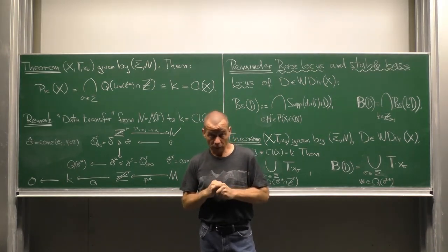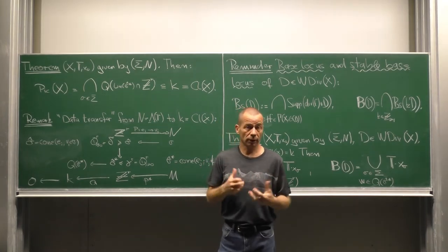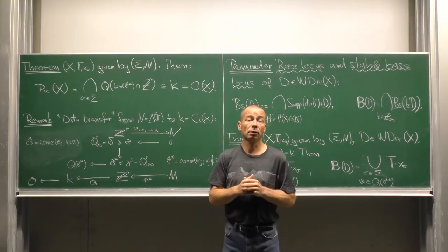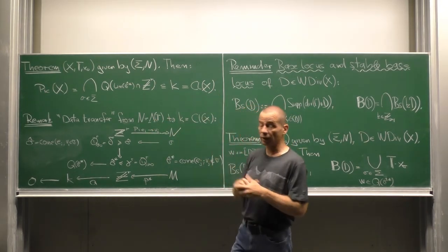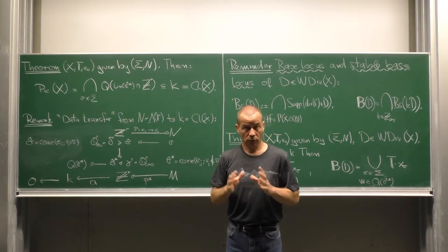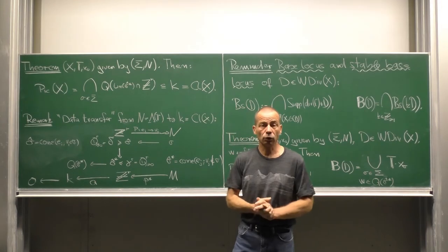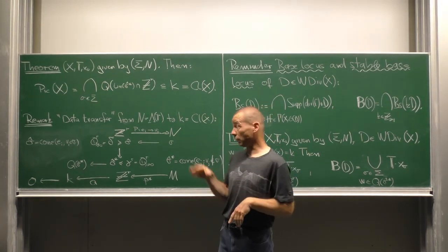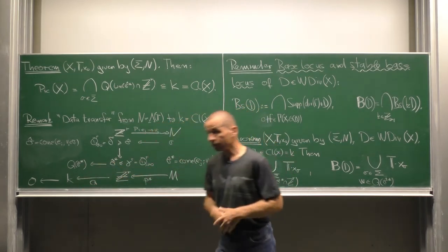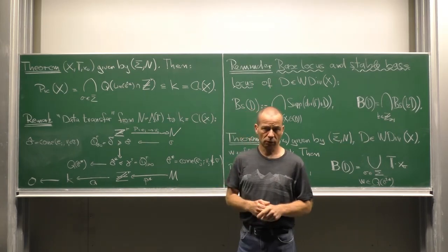A philosophical remark behind what we just did is a general principle of transferring information from the lattice of one parameter subgroups to the divisor class group. Recall that these two groups are related to each other via the map p from Z^r to N sending the i's canonical basis vector to the i's primitive generator v i. The divisor class group k is a factor group of Z^r modulo the image of the dual map p star of p.